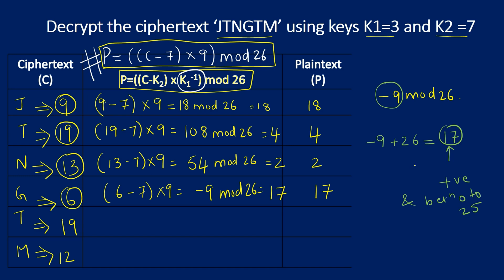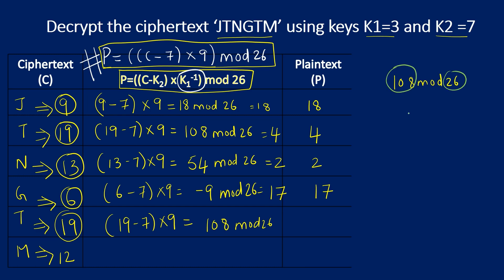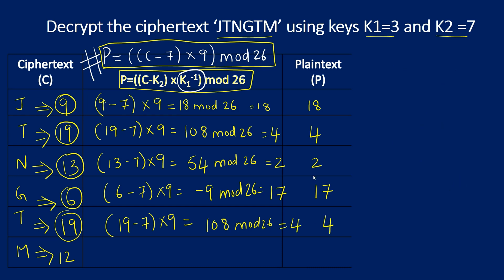For C = 19 again: (19 − 7) × 9 mod 26 = 108 mod 26. Since 26 × 4 = 104, the remainder is 4. So the recovered plaintext number is 4.